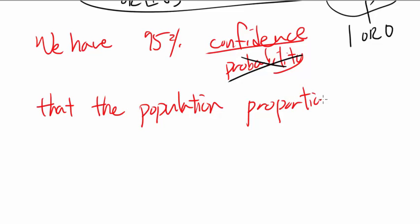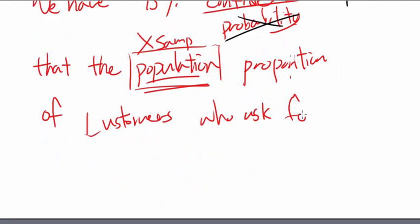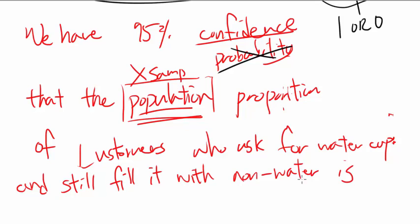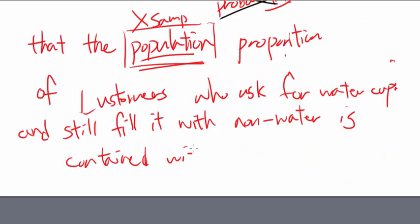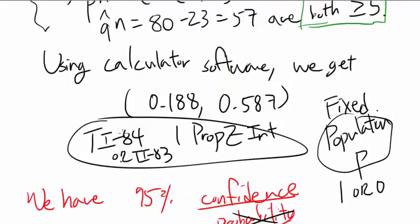We have 95% confidence that the population proportion—you cannot say sample. The sole reason for constructing a confidence interval is to figure out something about the population, not for the sample. If you put sample, that's points taken off once again. We have 95% confidence that the population proportion is—let's actually put this in context—population proportion of customers who ask for water cup and still fill it with non-water is contained within 0.188 to 0.387. So that's the answer for number 1.